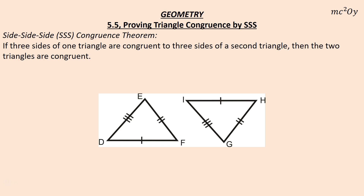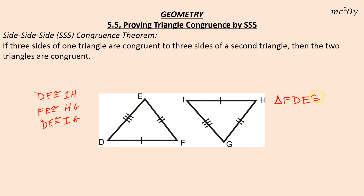For instance, we know that since DF is congruent to IH, and FE is congruent to HG, and DE is congruent to IG, that tells us that triangle FDE is congruent to triangle HIG.